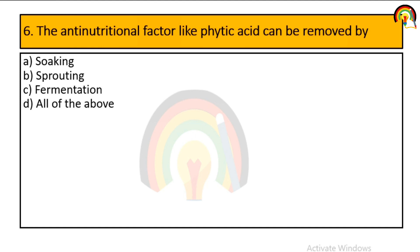The anti-nutritional factor phytic acid is a kind of anti-nutritional factor. It can be removed by soaking, sprouting, or fermentation — all of the above. So it can be removed by all these methods, and option D is correct.